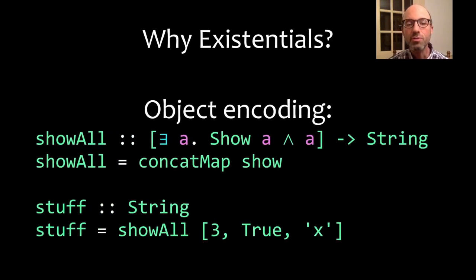This first example is an object encoding. It's a way of mocking up object-oriented types in a strongly typed functional programming language like Haskell. The idea here is that we can have a showAll function that takes a list of this existential type.